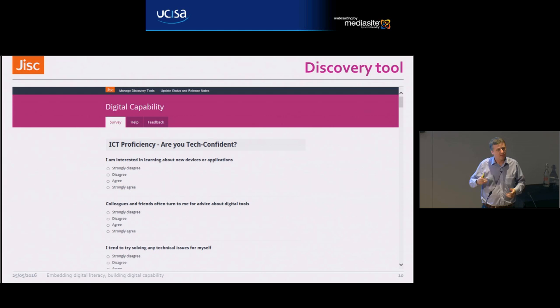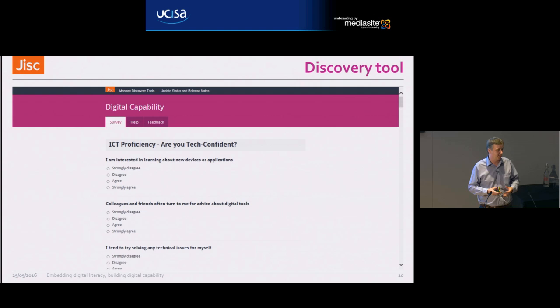The way the tool works is there's a series of questions related to the different capabilities, such as 'I'm interested in learning about new devices or applications.' This is not about testing competencies or skills — it's about discovering where you are, the sort of person you are in terms of digital capability, what that means, and therefore what you can do differently.